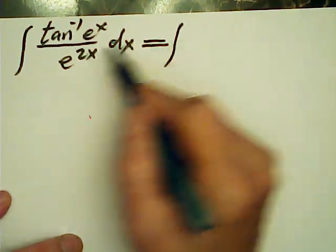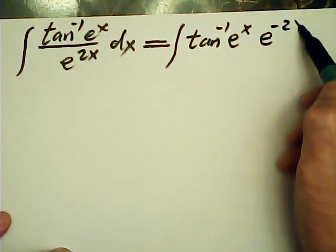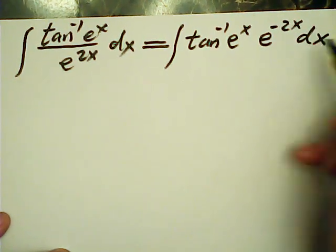Okay, let me do this integral. First, I write this integral function as tan(e^x) times e^(-2x)dx. Okay, that's obvious.